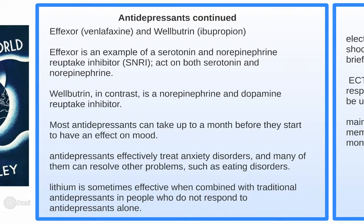Two additional types of antidepressants: Effexor is an example of a serotonin-norepinephrine reuptake inhibitor (SNRI), which acts on both serotonin and norepinephrine. Wellbutrin, in contrast, is a norepinephrine and dopamine reuptake inhibitor — two additional different types of medications.